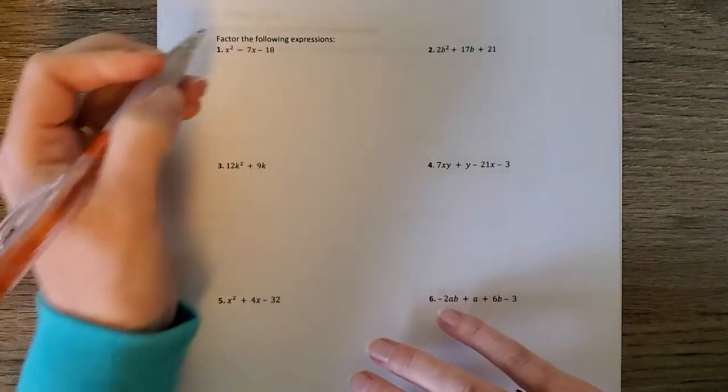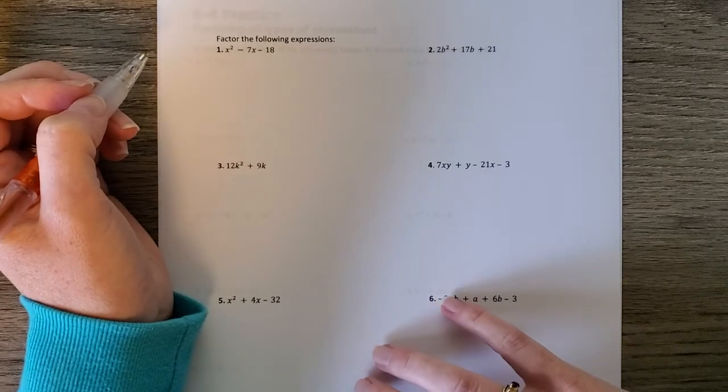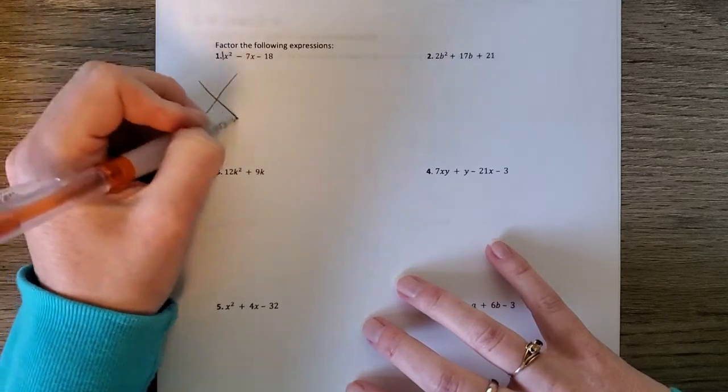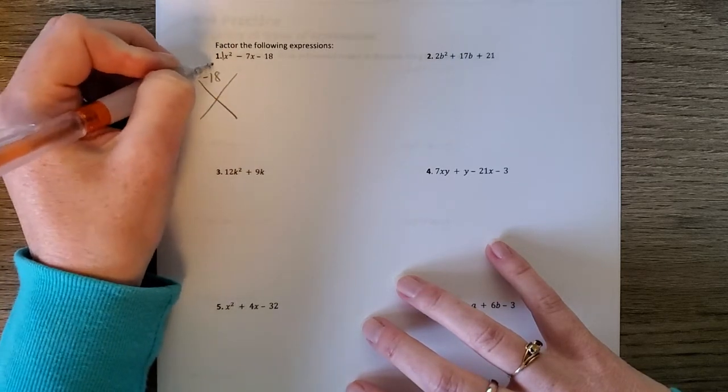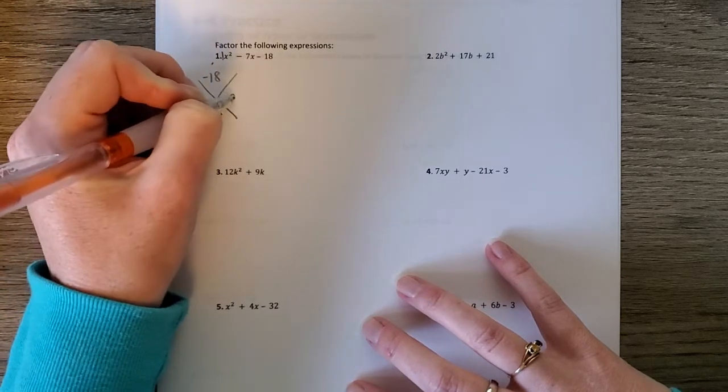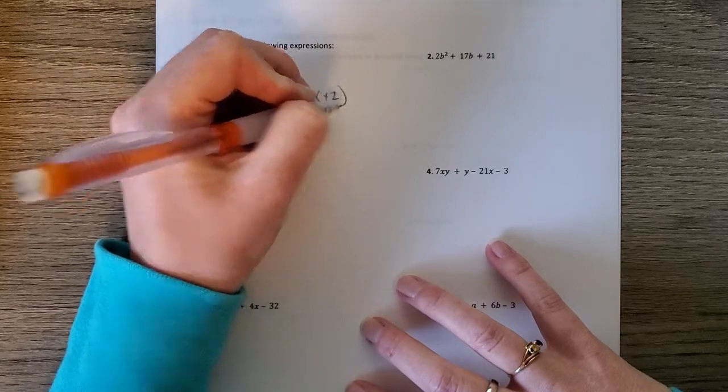Now we have practice here. So now you have to figure out which type to use. So if I look at this first one, I say, okay, it's three terms. Which means I'm going to use either shortcut or split the middle. Since this a is 1, I can use the shortcut. What multiplies to negative 18 and adds to negative 7, negative 9, positive 2, shortcut x minus 9, x plus 2.